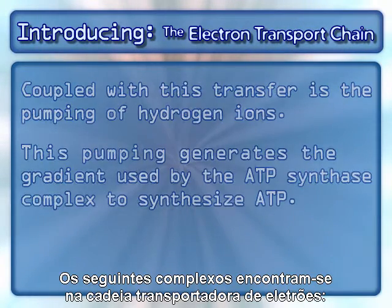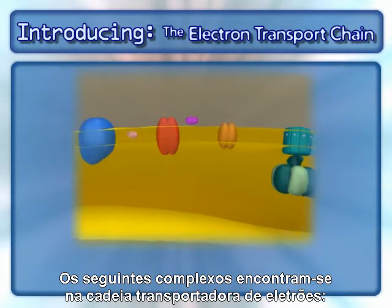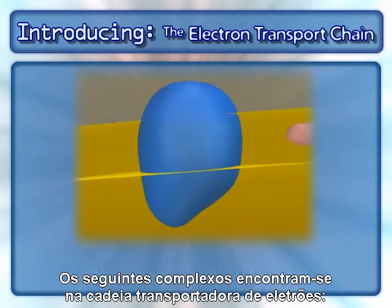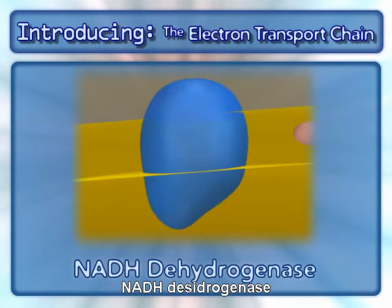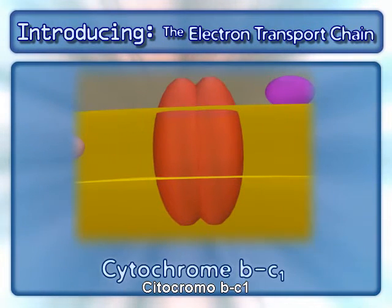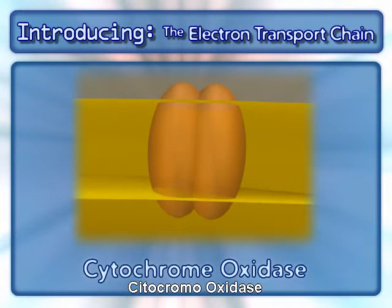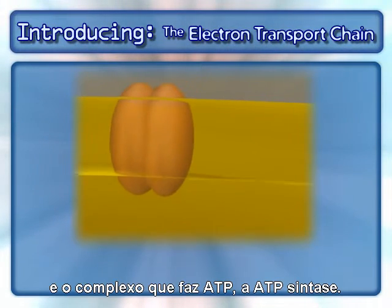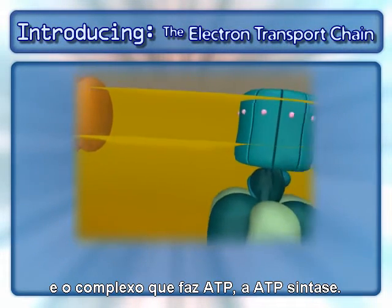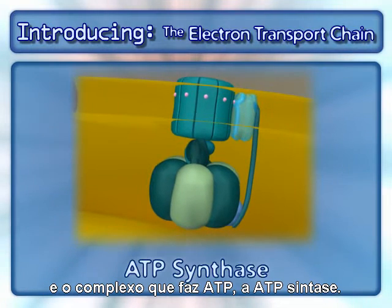The following complexes are found in the electron transport chain: NADH dehydrogenase, cytochrome BC1, cytochrome oxidase, and the complex that makes ATP — ATP synthase.